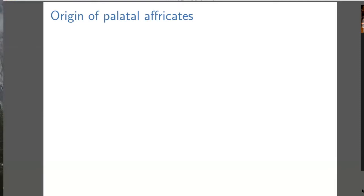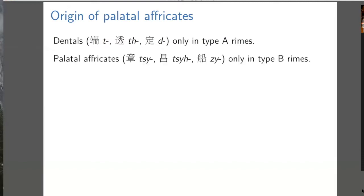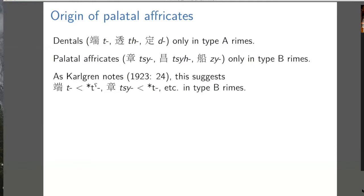We can do internal reconstruction and propose that G changes to gamma in type A syllables. So now we've gotten rid of gamma for Old Chinese. Now we look at the palatal affricates and notice that dental stop initials only occur in type A rhymes, and the palatal affricates only occur in type B rhymes. So we can suggest that type B syllables are a conditioning environment for palatalization, and we don't have to reconstruct palatal initials for Old Chinese.